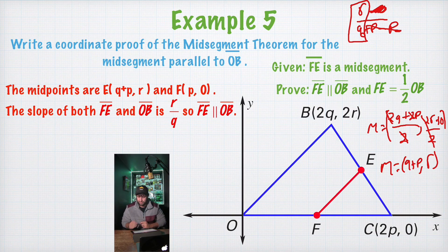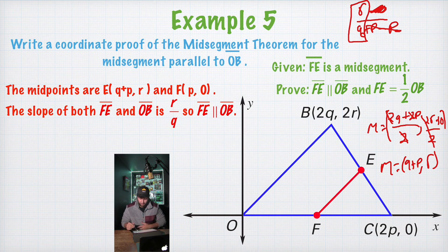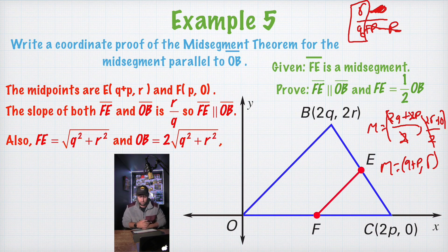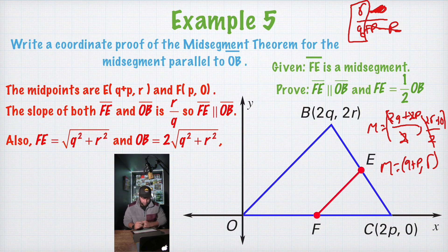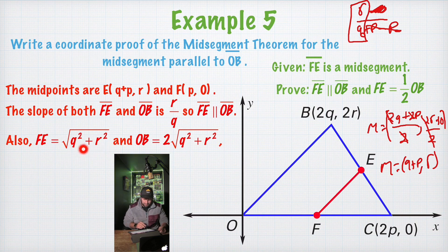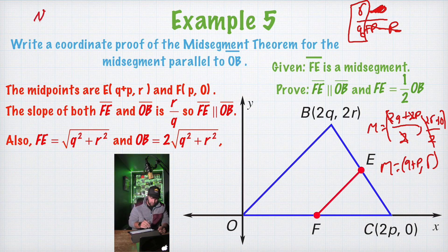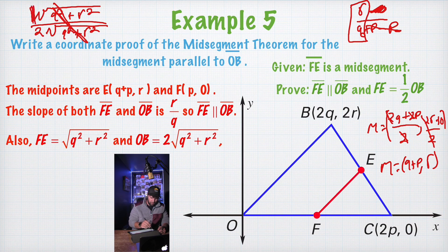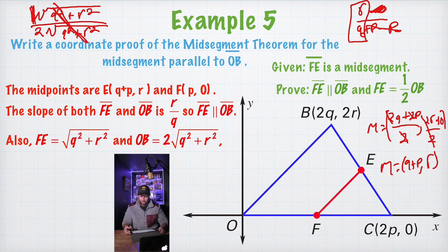Now, the last thing they want to know is prove that FE is one half of OB. And to do that, we're just going to plug in our coordinates into the distance formula. And when we do that, FE is going to come out to equal square root of Q squared plus R squared. And OB is going to come out to equal two square root of Q squared plus R squared. And you do that by plugging into distance formula like we did on the last slide. I'm not going to take your time because I know your time is precious. But we know that if we were to put this compared to this, the square root of Q squared plus R squared compared to two square root Q squared plus R squared, let's put those in a fraction. Square root Q squared plus R squared over two square root Q squared plus R squared. The square roots are going to cancel out. And there's an imaginary one out front. So we're left with one half. So we know that FE is one half of OB.